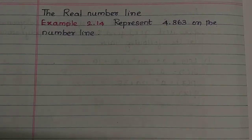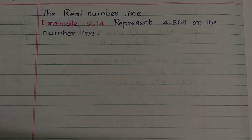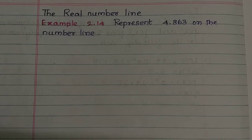Hi students. In this video, we look at the real number line. The real number line contains real numbers. What are the real numbers included? That means natural numbers, whole numbers, integers, and rational numbers. Rational numbers include terminating, recurring, and non-terminating types. We can locate any real number on the number line.